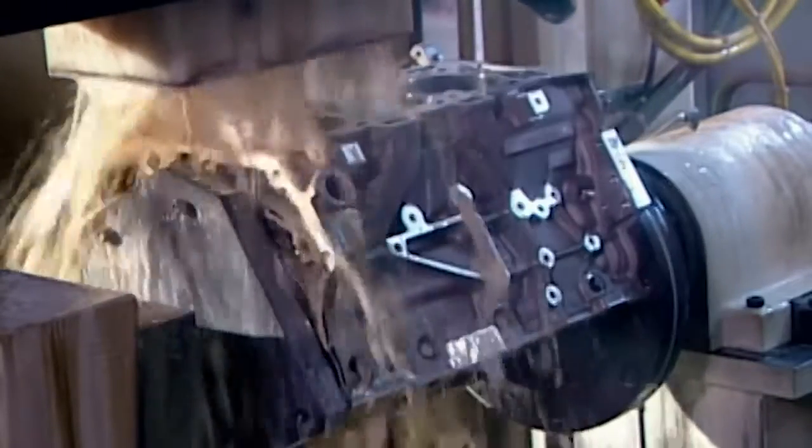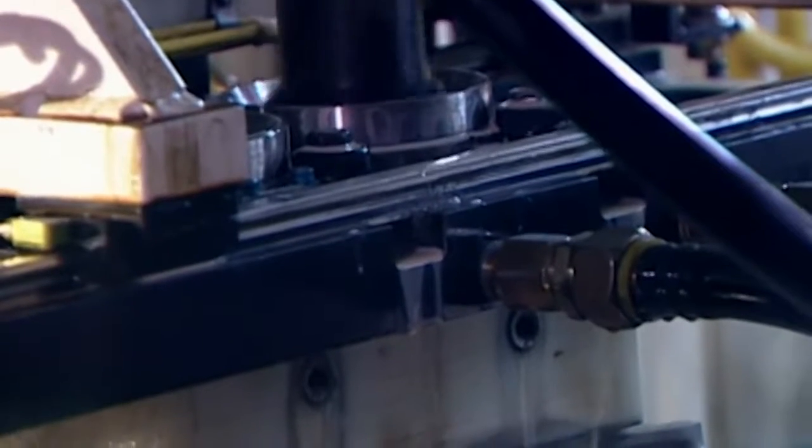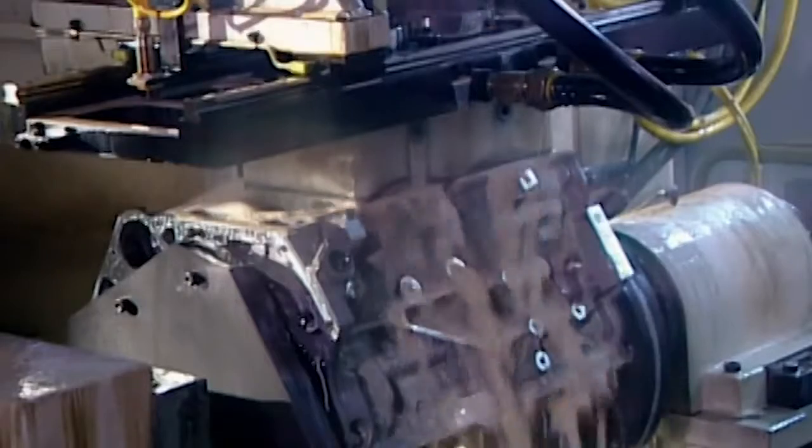Engine components are housed in what's called the engine block. It arrives at this plant partially made. Here the cylinder bores, the holes in which the pistons move up and down, are finished off by machining.